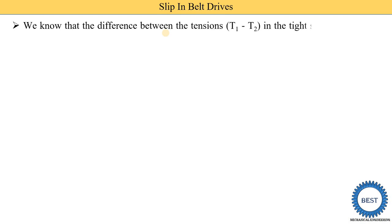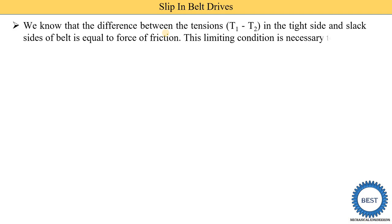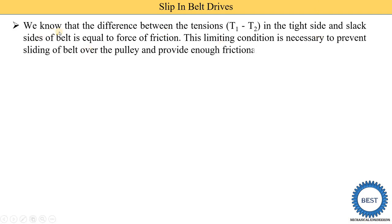We know that the difference between the tension T1 minus T2 — in the tight side and the slack side of the belt — is equal to the force of friction. This limiting condition is necessary to prevent the sliding of the belt over the pulley and to provide enough frictional grip. So when T1 minus T2 equals the force of friction, this condition is satisfied and no sliding or slip occurs.